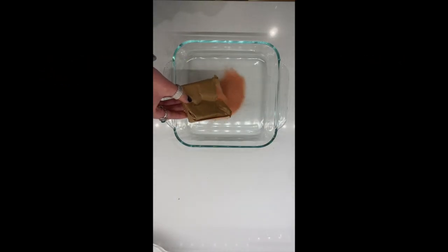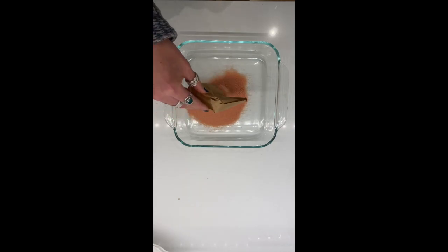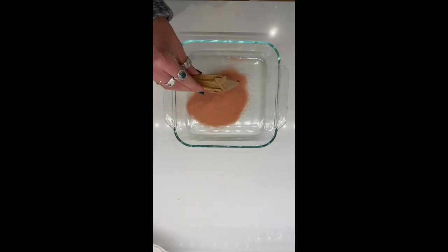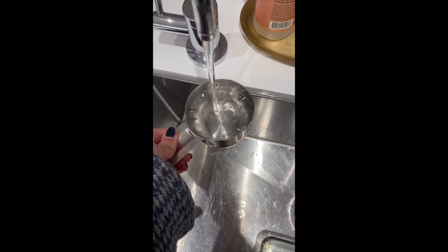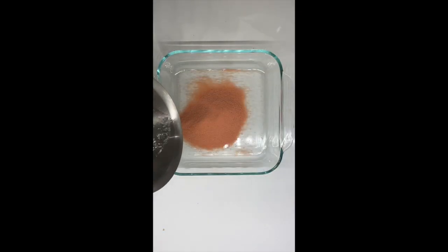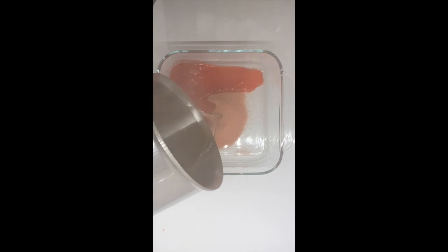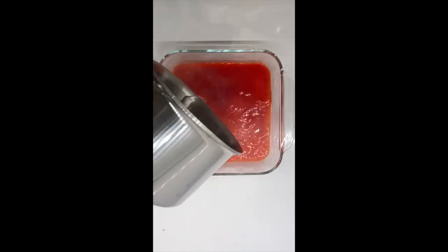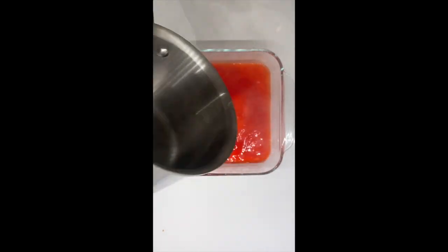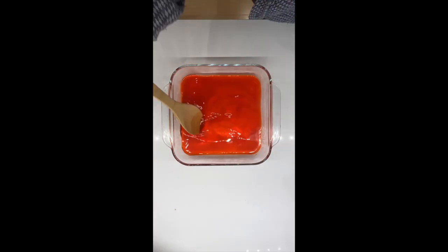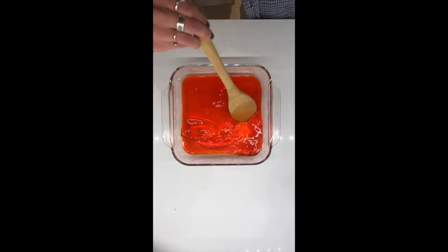The boiling water breaks down the bonds that hold the collagen together. When the Jell-O cools, the colored and flavored substances become trapped between the bonds as they strengthen. This is breaking the weak bonds that hold the collagen protein chains together.